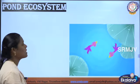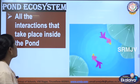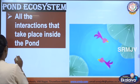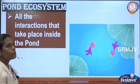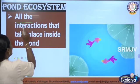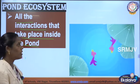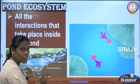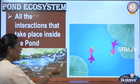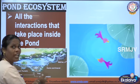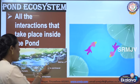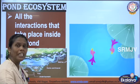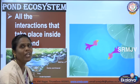Now we are going to discuss about pond ecosystem — all the interactions that take place inside the pond. In a pond, living organisms include fish, plants, snails, and insects. The non-living components include rock, sand, temperature, and water. In the pond ecosystem, the living organisms interact with the non-living organisms.